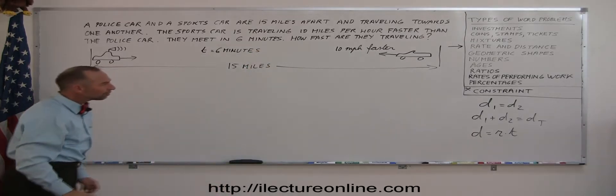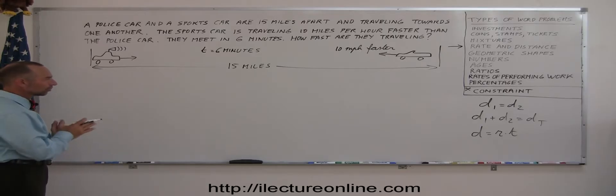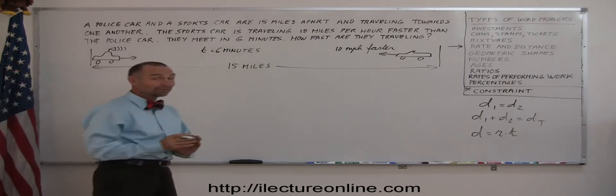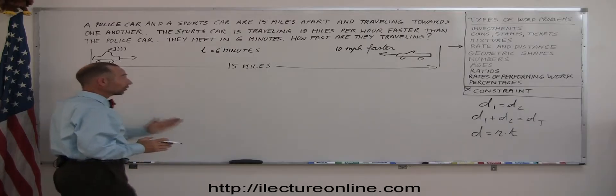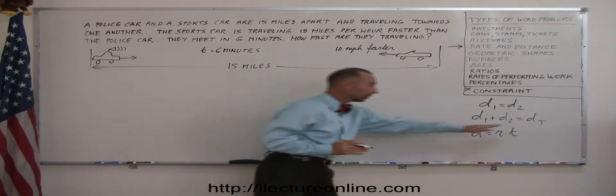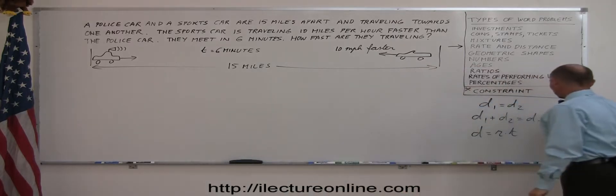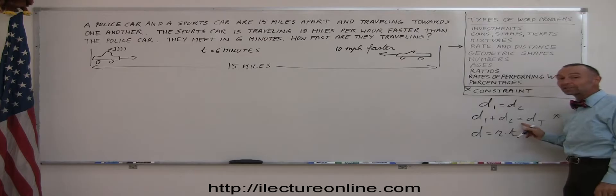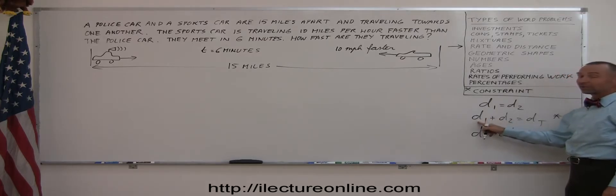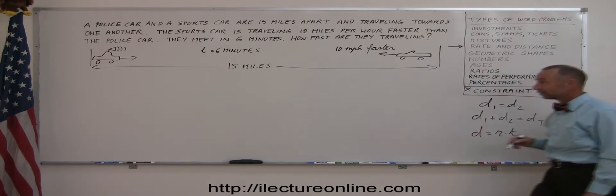All right, but look at this picture. Something seems to emerge. You know the total distance traveled. You don't know how far the police car travels. You don't know how far the sports car travels, but you do know that together they travel a total of 15 miles. And it all of a sudden appears like this may be the equation we're going to need to solve this problem. The distance traveled by the police car plus the distance traveled by the sports car equals the total distance traveled.